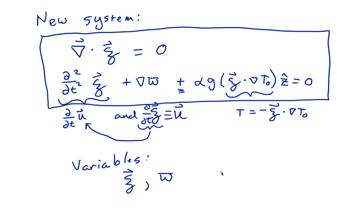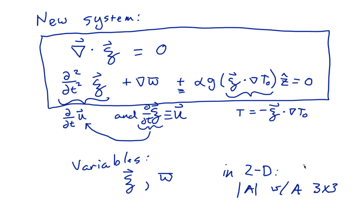In two dimensions, solving the wave system now requires the determinant of a 3-by-3 matrix, whereas before we had integrated the buoyancy equation, it was a 4-by-4 matrix. A 3-by-3 matrix can be much easier to take the determinant of by hand. So this trick of using a vector displacement allows you to reduce the equations by one order — one set of equations and variables — and in doing so simplify the determinant needed to determine the dispersion relationship or linear stability properties of your system.